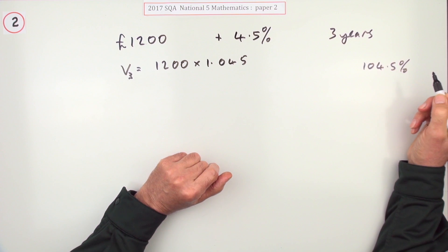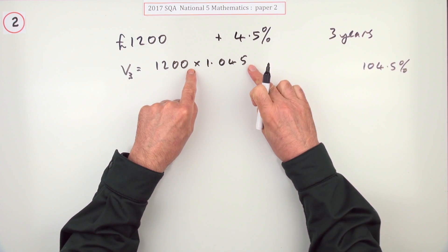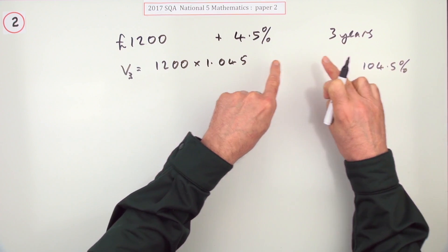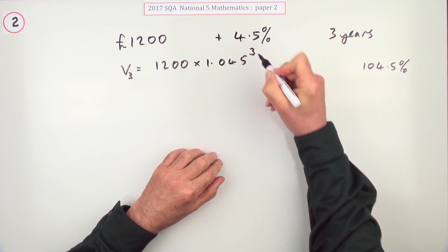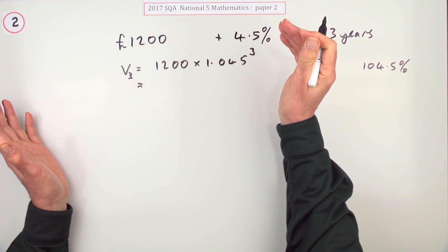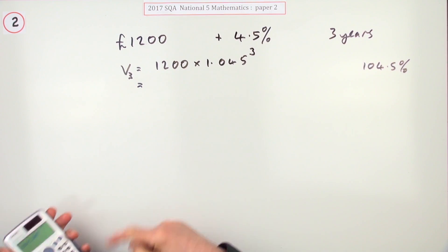Rather than putting that down times that times that - you've done it three times - just put in power three, and that's it, virtually done apart from the rounding.